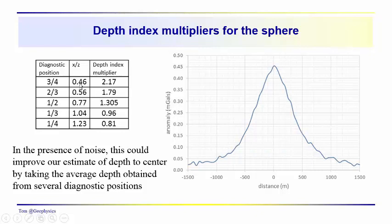We note that the anomaly falls off to these values. The value of x three quarters over z is equal to 0.46. We just went through that. The depth index multiplier is 2.17. So these are the depth index multipliers.